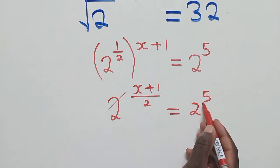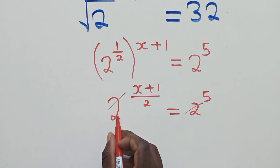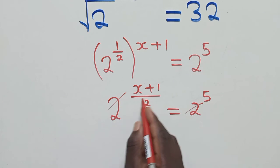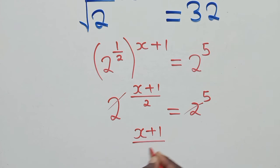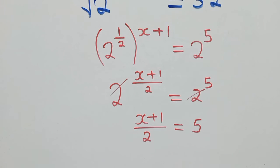The bases are the same, we can forget about the bases, we focus on the powers. Or in other ways, upon balancing the bases, you directly go to the powers. So I've got x plus 1 over 2 there, equal to 5. We just cross multiply, we're going to get x plus 1 equal to 10.